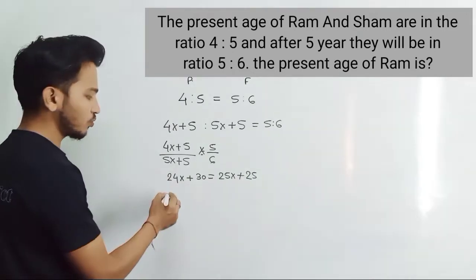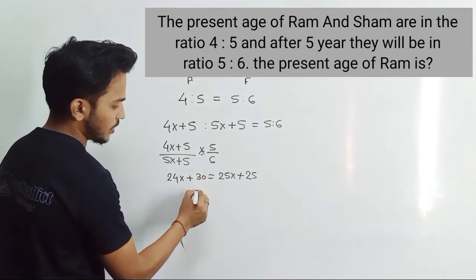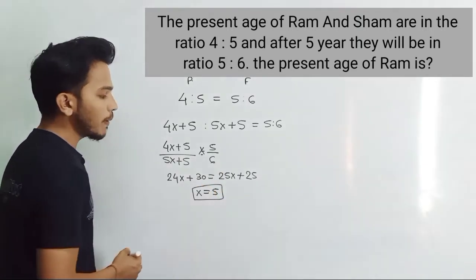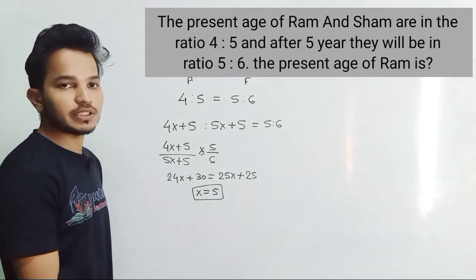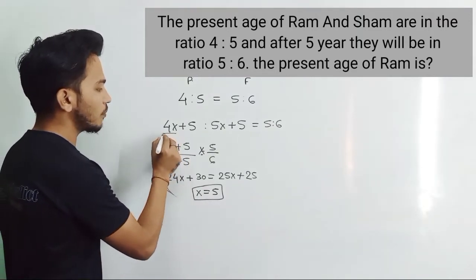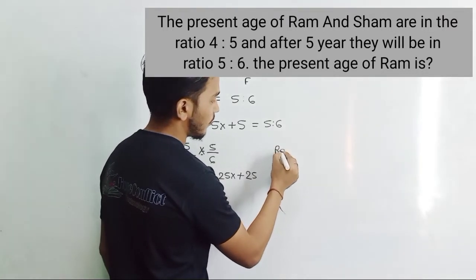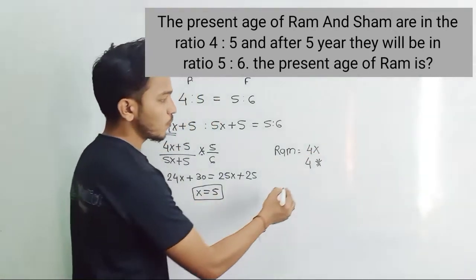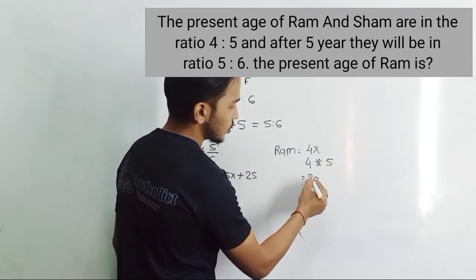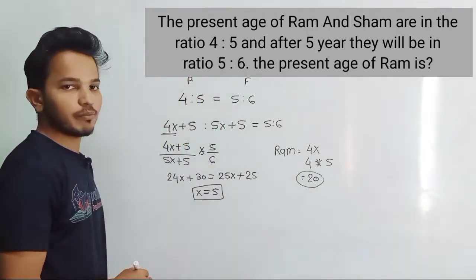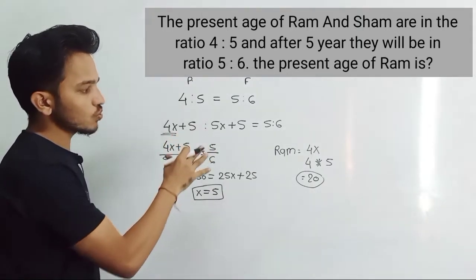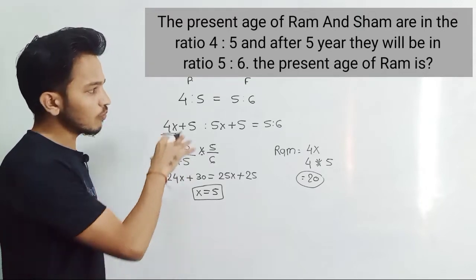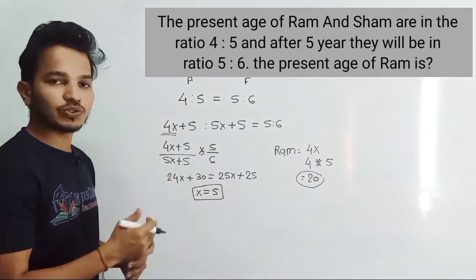Now cross multiply: 6(4x + 5) = 5(5x + 5), giving 24x + 30 = 25x + 25. Solving: 24x − 25x = 25 − 30, so −x = −5, meaning x = 5. The present age of Ram = 4x = 4 × 5 = 20 years. So 20 is the present age of Ram. This is the basic method — beginners can start from here; shortcut tricks are available for exam conditions.